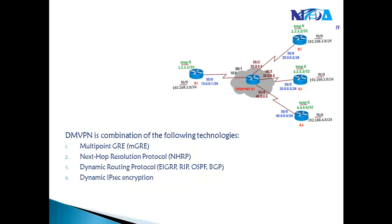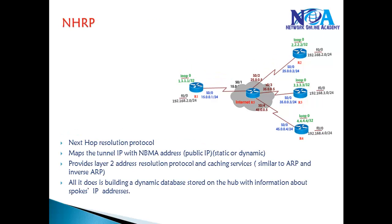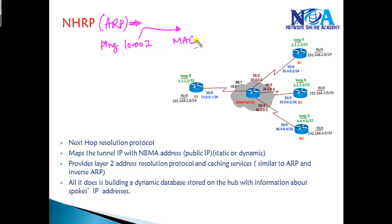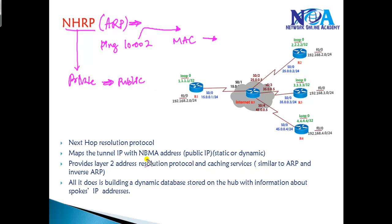NHRP is the second protocol that helps build Dynamic Multipoint VPNs. Next Hop Resolution Protocol is similar to normal ARP or Inverse ARP in Frame Relay. In Ethernet, ARP resolves a destination IP address into a MAC address before reaching the switch. Similarly here, when Router 1 needs to communicate with Router 2, NHRP provides the mapping of a private IP address to a public IP address. In DMVPN terminology, the NBMA address is mapped with the tunnel IP address.